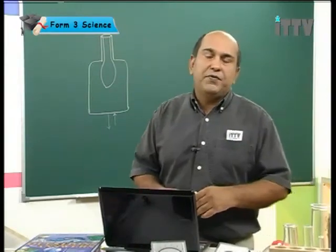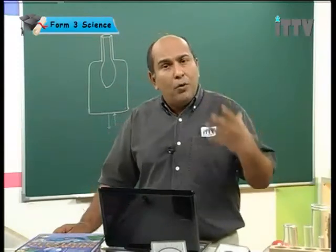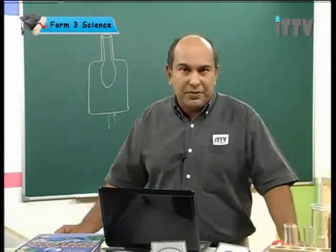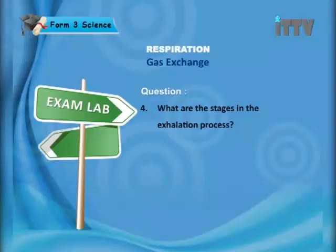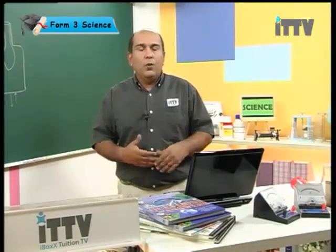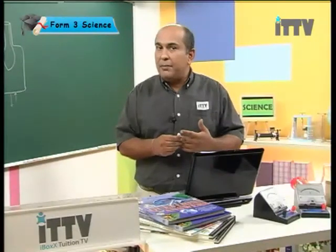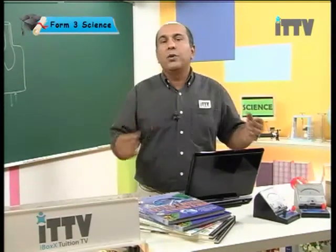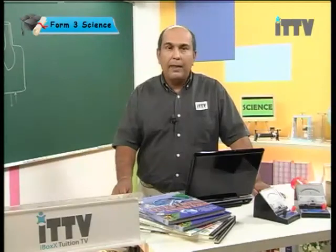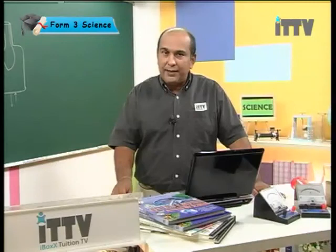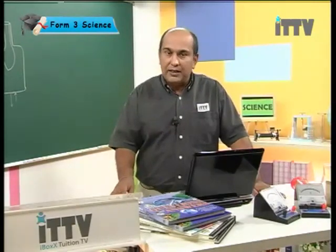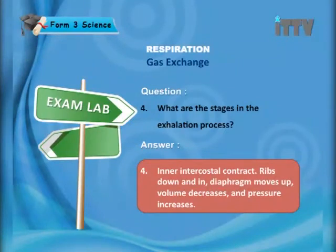Remember this process for exhalation. Just like the inhalation process, it is a common question in your exams and you need to know the steps. What are the stages in the exhalation process? Start with the intercostal muscles, describe what happens to the ribs, tell me what happens to the diaphragm, then relate volume and pressure. The answer: inner intercostals contract, ribs down and in, diaphragm moves up, volume decreases, and pressure increases.